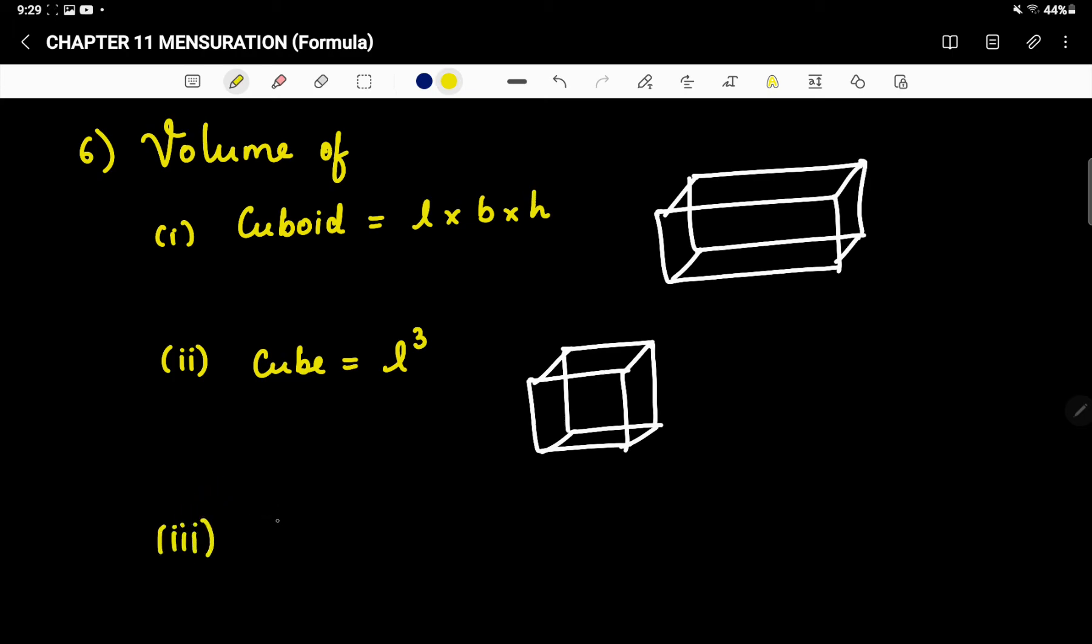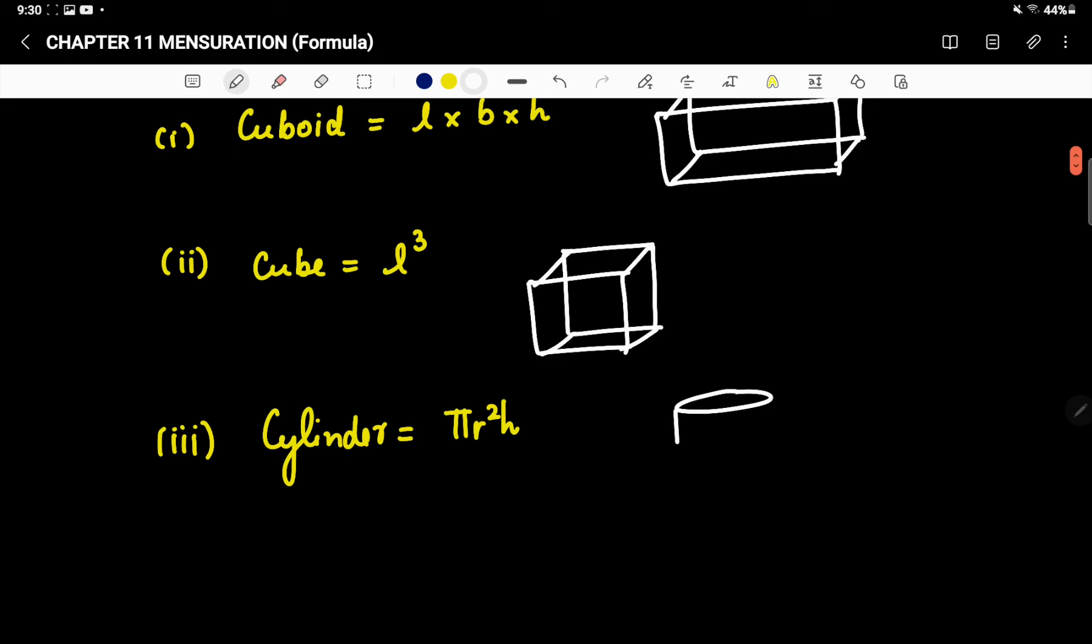Third one is cylinder. Cylinder is πr²h. The volume of a cylinder.